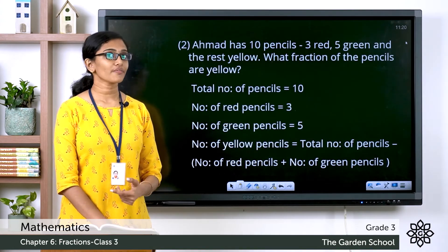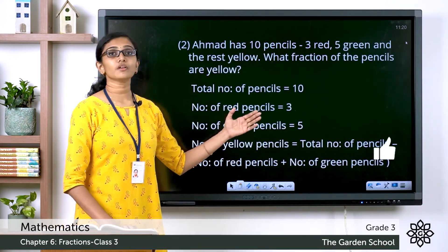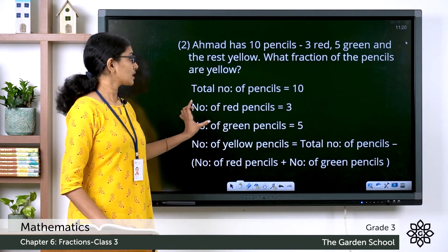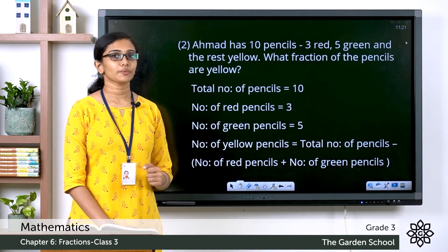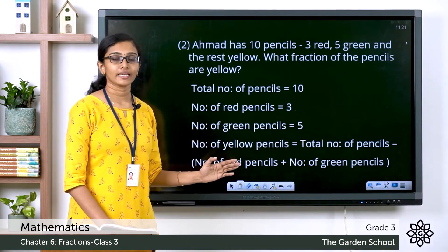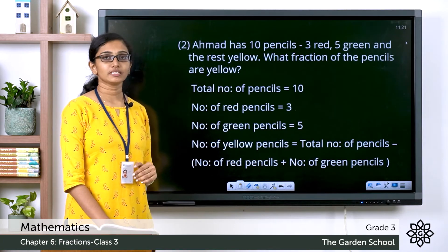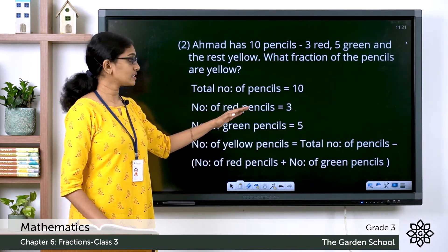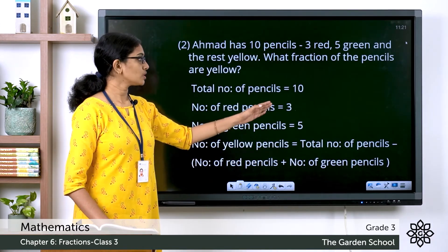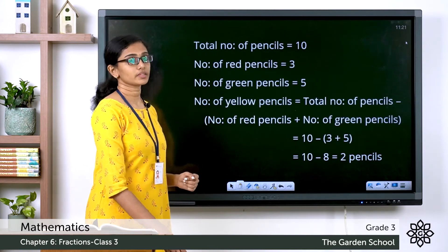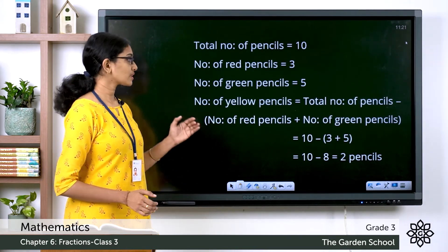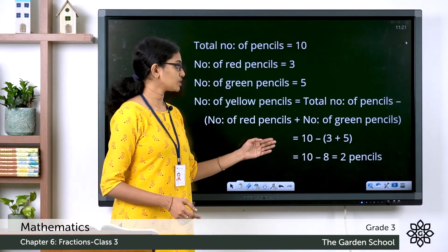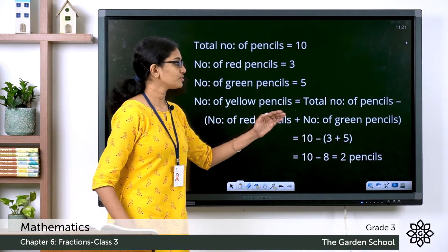The number of yellow pencils will be equal to the total number of pencils minus the number of red pencils and the number of green pencils — that is, the total minus the sum of red and green pencils. Together, the number of red pencils and green pencils is equal to 3 plus 5, which equals 8. We have a total of 10 pencils. So the number of yellow pencils is equal to 10 minus 8, which is equal to 2 pencils.